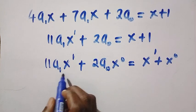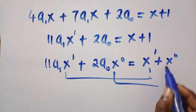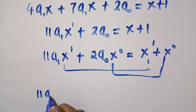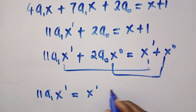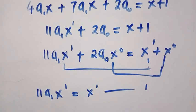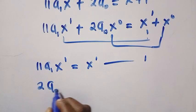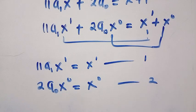Then, by comparing, we have this compared to this, and we have this compared to this. Next, we have 11a_1 x to the power of 1 equals x to the power of 1. And we call this one equation 1. And again, we have 2a_0 x to the power of 0 equals x to the power of 0. We call this one equation 2.